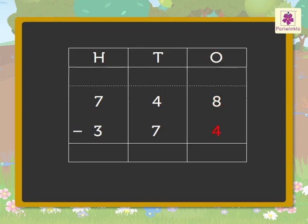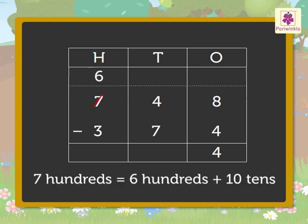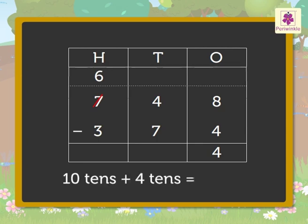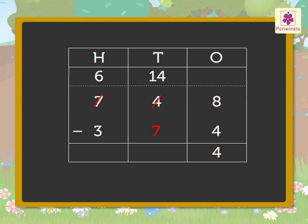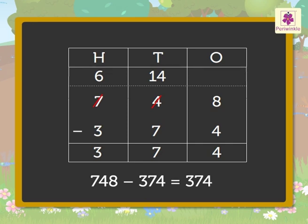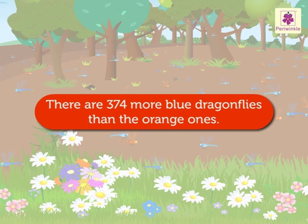Subtract the ones: eight minus four equals four. Now subtract the tens: four is smaller than seven, so we regroup seven hundreds as six hundreds plus ten tens. Now we have ten plus four equals fourteen tens; therefore, fourteen minus seven equals seven tens. Now subtract the hundreds: six minus three equals three. Thus, seven hundred forty-eight minus three hundred seventy-four equals three hundred seventy-four. Hence there are 374 more blue dragonflies than the orange ones.